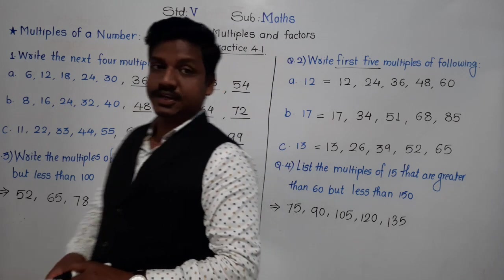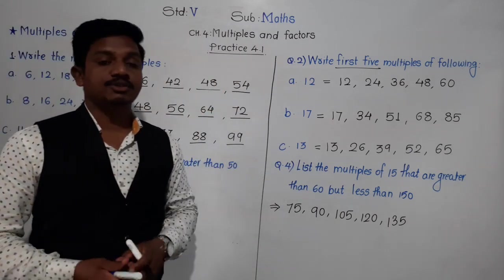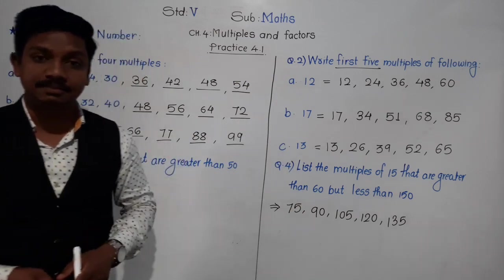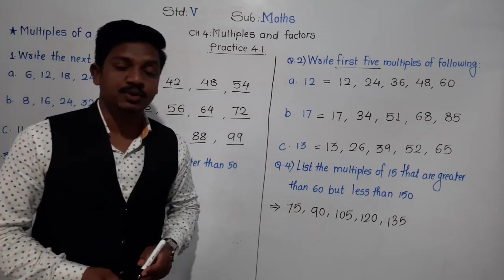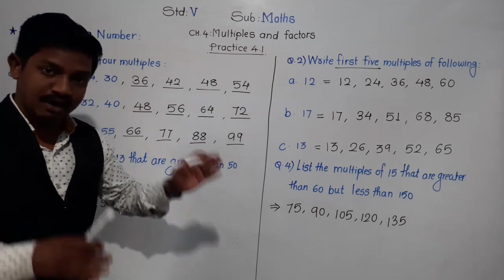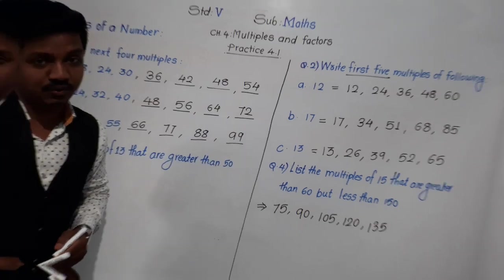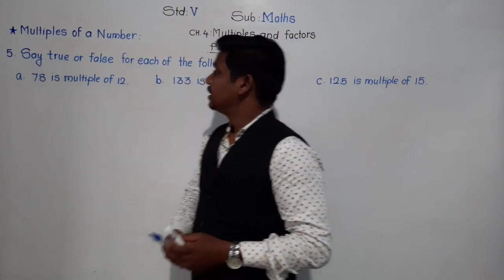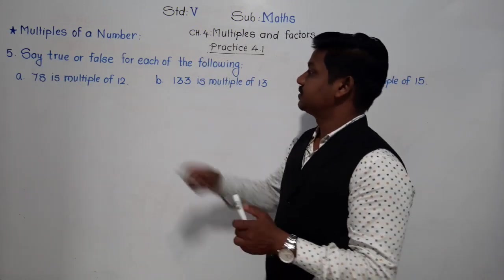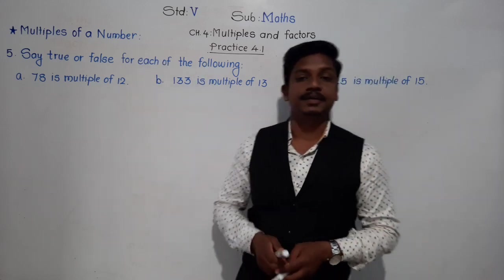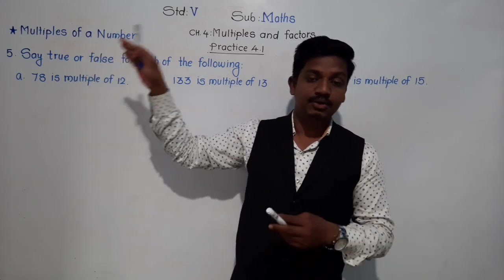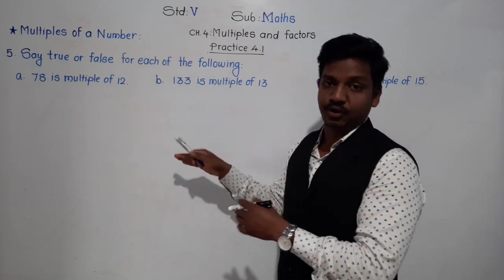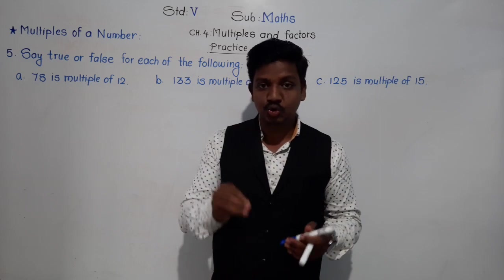So the multiples of 15 which are greater than 60 and less than 150 are: 75, 90, 105, 120, and 135. In this way we solve examples about multiples where a specific range is given. Pause the video and write this in your notebook. After this we will solve the last question.